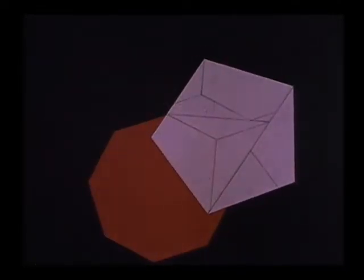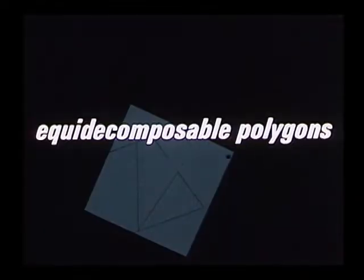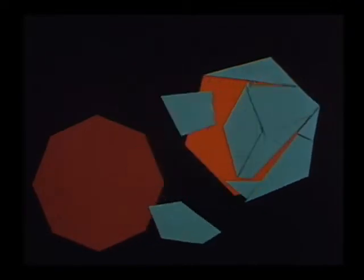Any two coplanar polygons of the same area are equi-decomposed. This means that each can be cut into a finite number of pieces, which can then be reassembled to form the other.